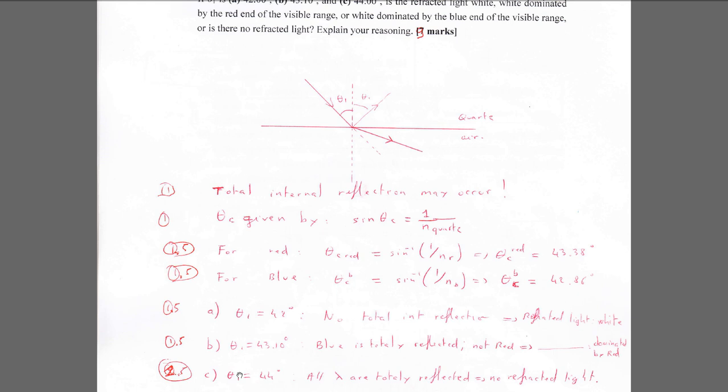For case C, theta equals 44 degrees. Now we are above both critical angle values, so everything will be totally reflected inside the incident material. Therefore there will be no refracted light.